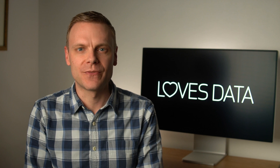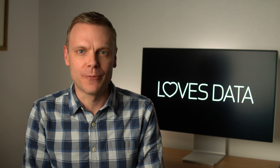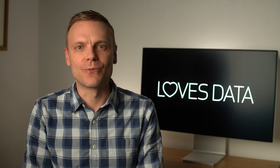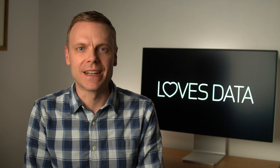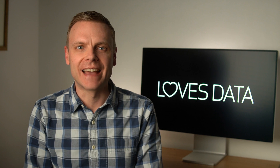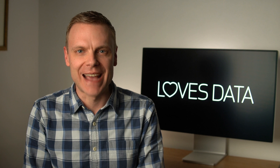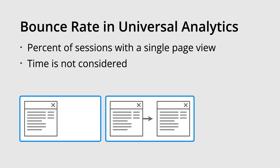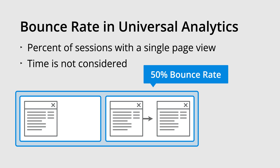The really important thing about this addition is that Google is listening to people's feedback. After originally pushing engagement rate as a replacement for bounce rate, it's great to see Google reconsidering some decisions they've made about Google Analytics. In Universal Analytics, bounce rate was the percentage of sessions that included a single page view. So if someone viewed a single page and then left, no matter how long they spent on the page, it was considered a bounce.